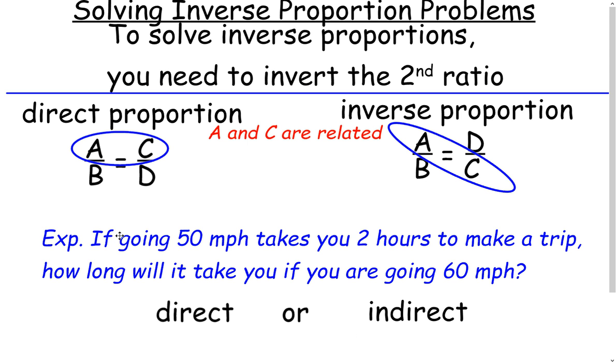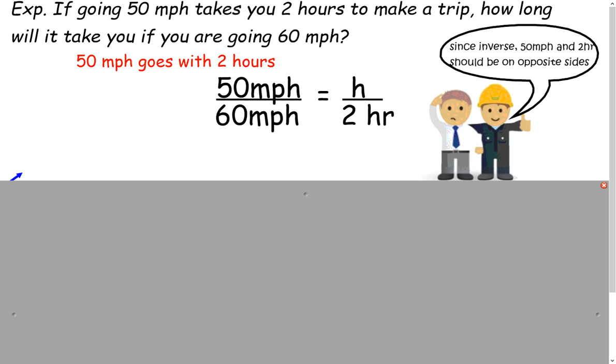So here's our example: if you're going 50 miles an hour and it takes you two hours to make the trip, how long will it take you if you're going 60 miles per hour? So is this a direct or an indirect proportion? It's an indirect proportion. And let's see how we're going to solve this.